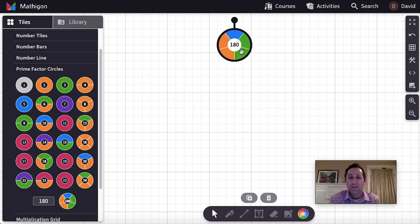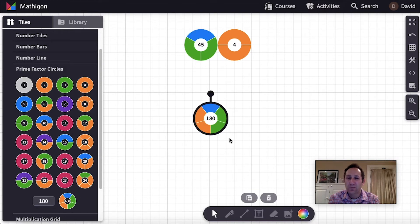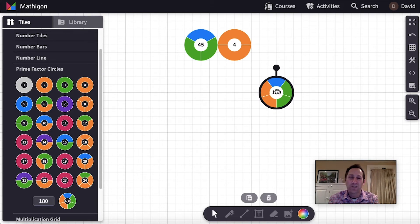I might show them that I'm going to pull out a couple to make a factor pair. There's 6 times 30 is 180. Or maybe I pull out 3 of them. 45 times 4. And I would stop there and then I would have them go off and work in pairs or on their own and use a prime factor circle of 180 to try to find all the factor pairs of 180 by doing this pulling apart and putting together.